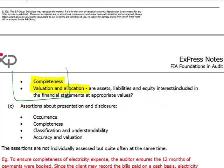We will also have assertions about presentation and disclosure. There are things that are not in the statement of financial position or in the P&L, but they need to feature in the financial statements somehow — usually in the notes. These include contingent liabilities and non-adjusting events after the reporting period. For these, we need to determine whether they actually occurred, whether all of them are included in the financial statements, whether they are properly classified as events after the reporting period or as contingent liabilities, and finally whether they were properly valued where valuation is possible, such as for contingent liabilities.